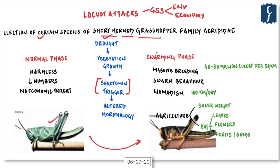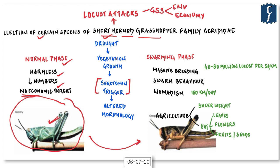In normal conditions, locusts are harmless — their numbers are very low and they pose no economic threat. But in certain specific conditions — a severe drought followed by lush growth of vegetation — a chemical known as serotonin triggers dramatic changes in their brain. Because of this trigger, they first alter their morphology, changing color and appearance.